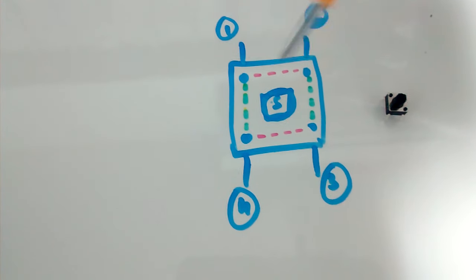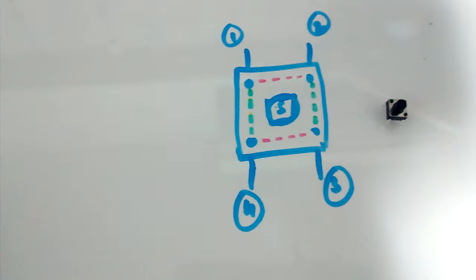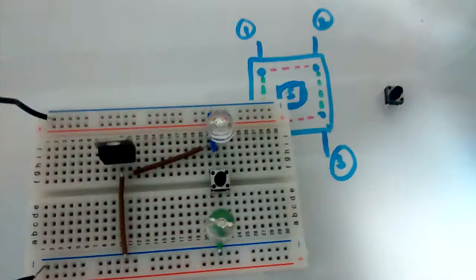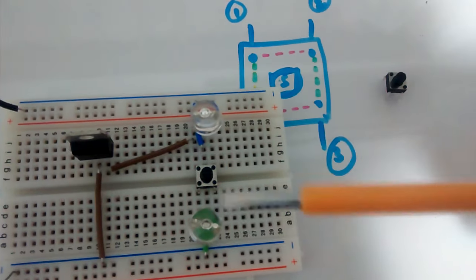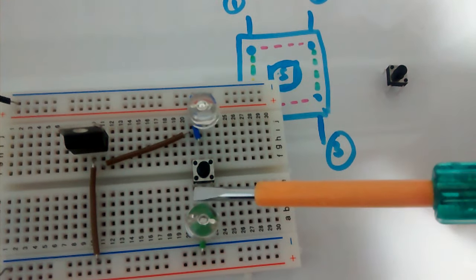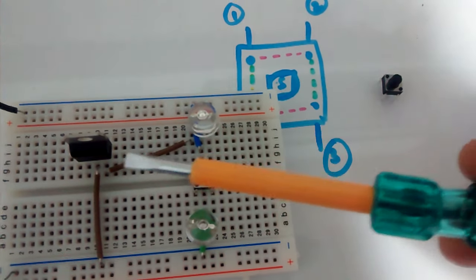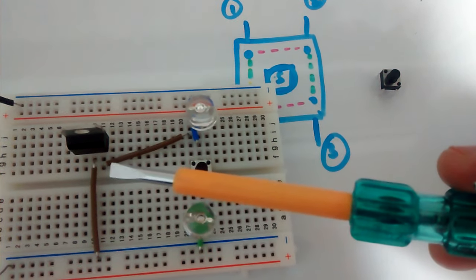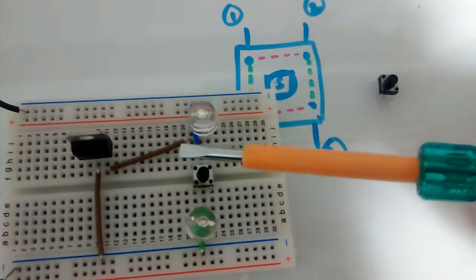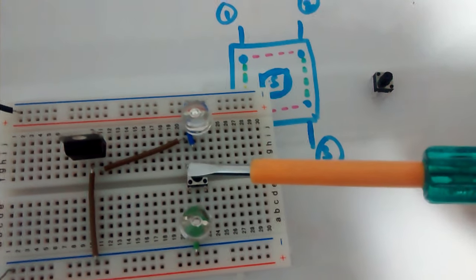So I have a breadboard here with the connections ready. As you can see, I have connected this green LED to this pin and this blue LED to this pin. The output from my 7805 voltage regulator is connected to pin number one.